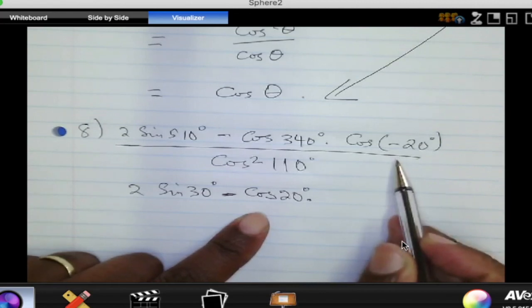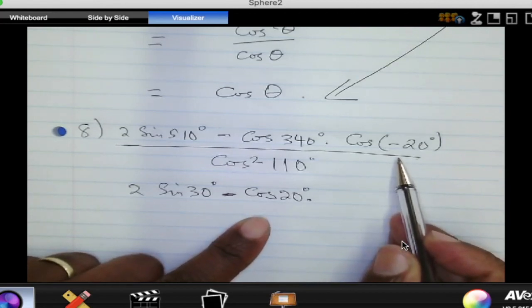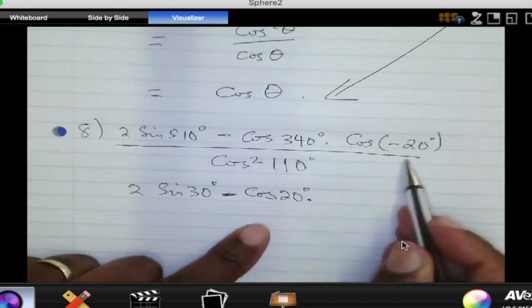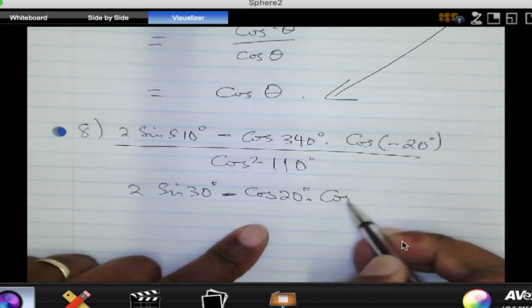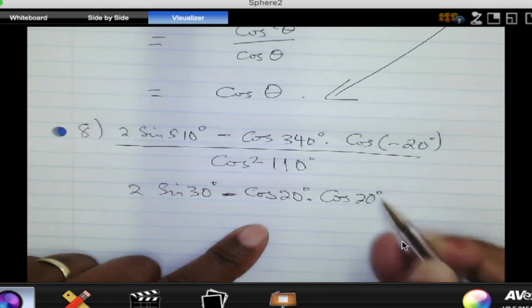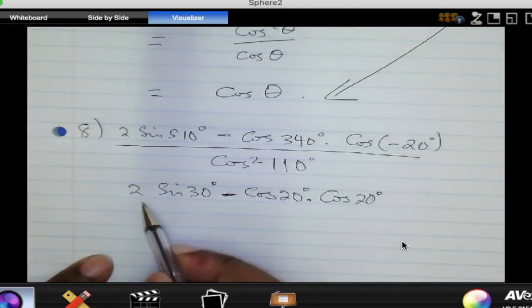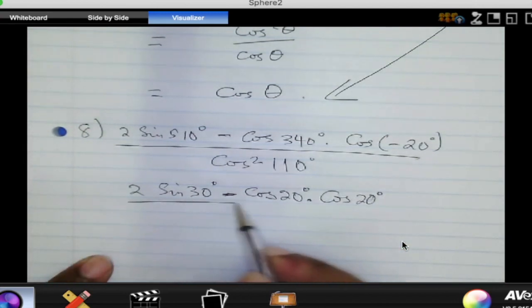Right. What about cosine of negative 20? This is quadrant 4. Cosine there is positive. So, this is still cosine of 20 degrees, right?